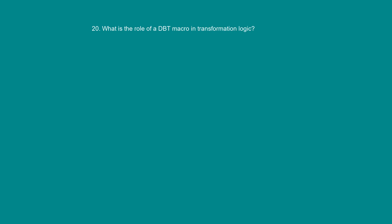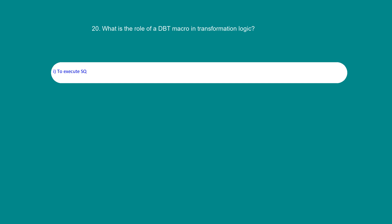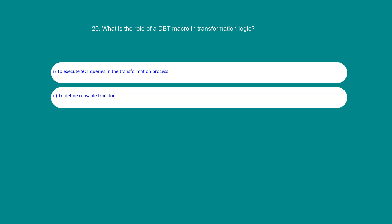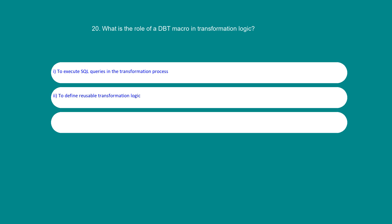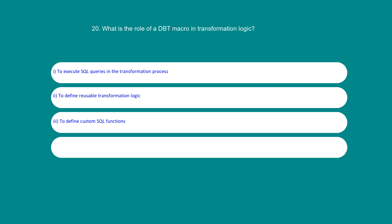What is the role of a dbt macro in transformation logic? Option 1: To execute SQL queries in the transformation process. Option 2: To define reusable transformation logic. Option 3: To define custom SQL functions. Option 4: To define conditional logic in transformations. The answer is 2: To define reusable transformation logic.